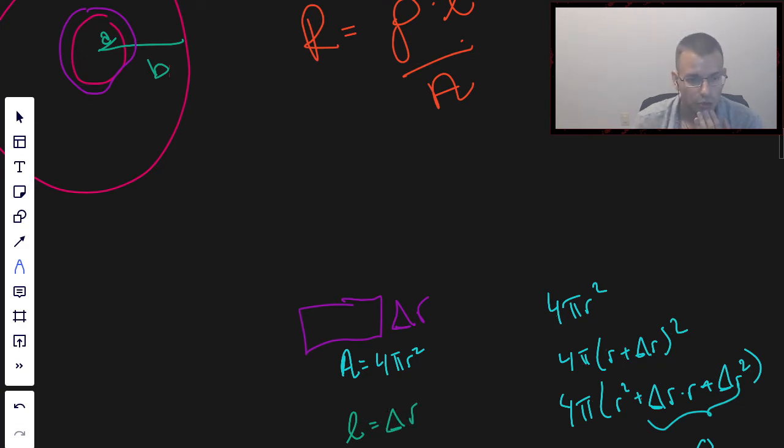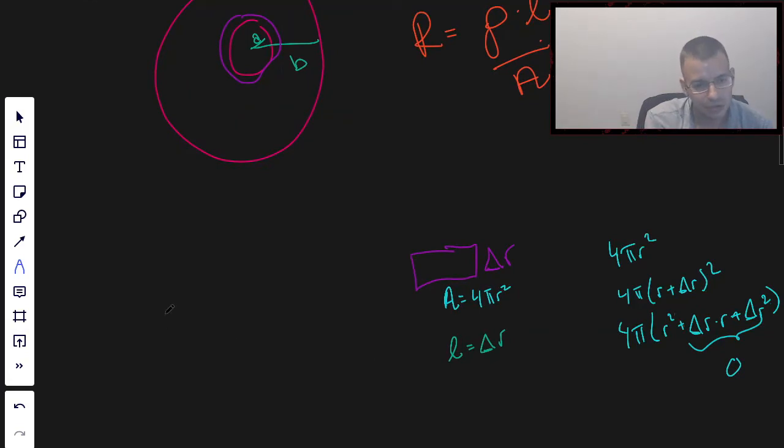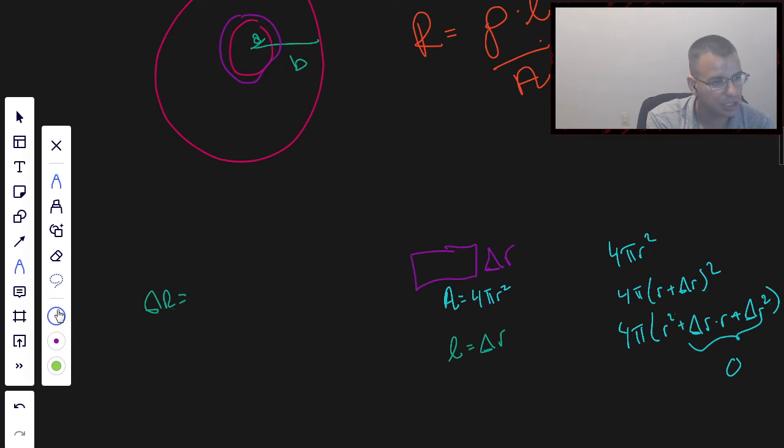And so, we can say that a little bit of resistance, delta R, equals rho times L, the length of one of these interior shells. It's going to be delta R. And then the area is going to be 4πR².